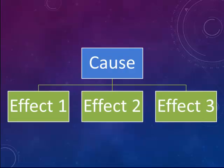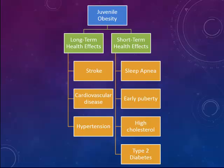One way a cause and effect paragraph can be organized is one cause and its many effects, as shown in the graphic here. For an essay about juvenile obesity, we might divide effects into long-term and short-term health effects. Long-term effects include stroke, cardiovascular disease, and hypertension. Short-term effects include sleep apnea, early puberty, high cholesterol, and type 2 diabetes.